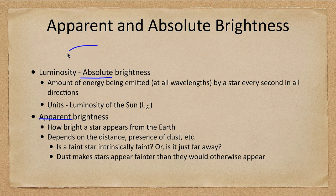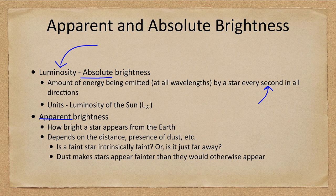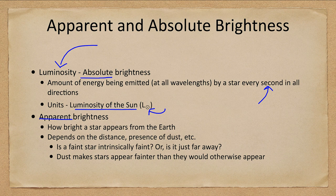The absolute brightness is the luminosity. This is the amount of energy being emitted at all wavelengths by a star every single second in all directions. This is a measure of how truly bright a star is, so if you want to compare two stars you want to look at their luminosities. The units are in terms of the luminosity of the sun — L with a little sun symbol below it — so we can compare other stars and find that they may be a hundred or a thousand times more luminous than the sun, or one tenth or one one-hundredth as luminous.